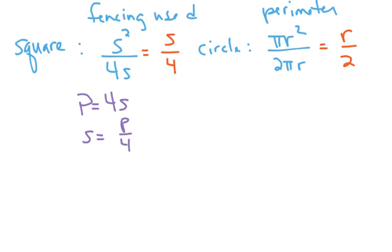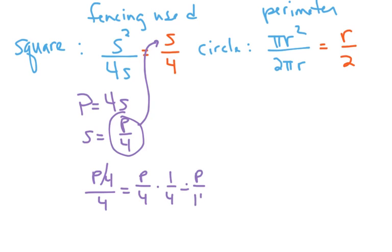What I'm going to do is plug this into this expression. I'm going to substitute. So I get P over 4 over 4, which is the same as P over 4 times the reciprocal of 4, which is 1 over 4, which gives me P over 16.